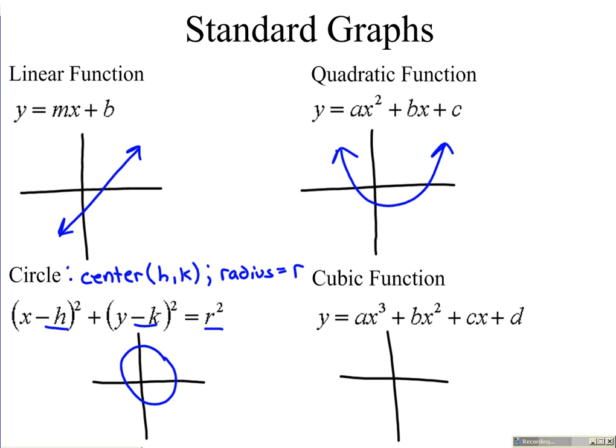A cubic function. Notice what makes this a cubic function is now we have an x variable that is cubed. Cubic functions have a general shape: increase from left to right, get a little flat in the middle, and then increase rapidly off to the right. So those four basic graphs, you should be able to look at an equation and say, oh, I know that's a circle, I know that's a parabola, I know that's a line, I know that's a cubic function, just by looking at the features of the equation.